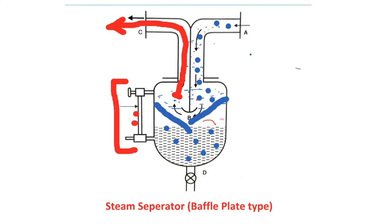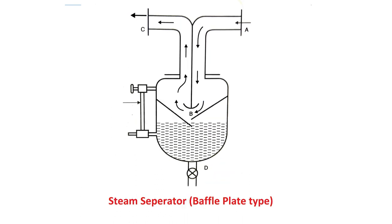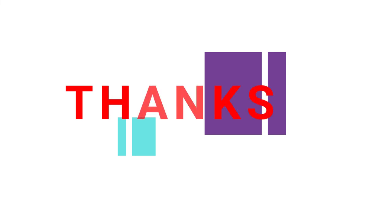The water collected in the vessel is removed at intervals through the drain pipe D. Whenever sufficient water has collected in the steam separator, it is removed via drain pipe D. So the working principle of the steam separator is very simple: due to inertia and density difference, water particles and steam are separated. Water particles, being denser, fall down and are collected in the vessel.